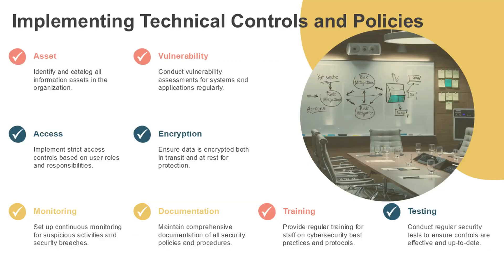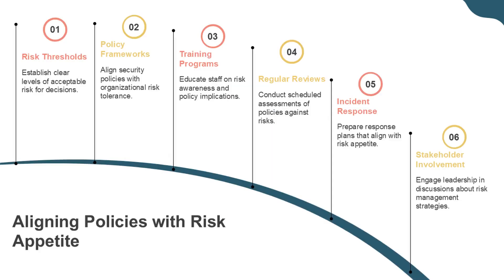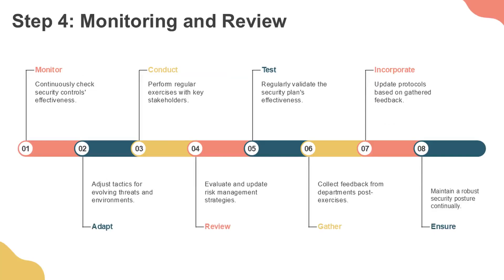After prioritizing risks, organizations must implement appropriate controls and strategies to address them. The mitigation phase includes developing tailored strategies to reduce identified risks based on their severity and business impact, implementing technical controls, policies, and procedures to minimize vulnerabilities, and selecting appropriate risk treatments, which may include risk acceptance, avoidance, transfer, or reduction.